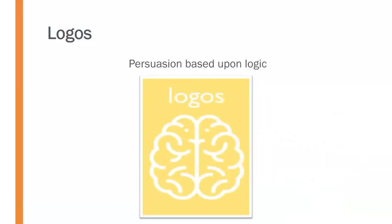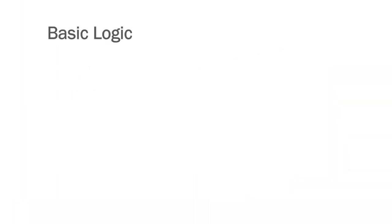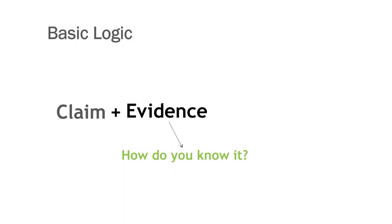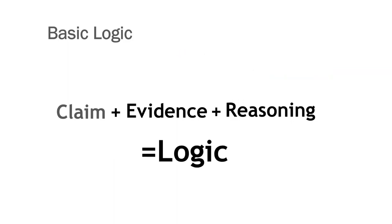Thinking about logos — persuasion based upon logic — we're appealing to the mind rather than tugging at the heartstrings. We ought to be concerned with facts, statistics, and sound reasoning. These demonstrate the accuracy and veracity of our case through logical appeals. Logic starts with a claim — what do you know? Then you add evidence — how do you know it? Then reasoning — how does your evidence prove your claim? When you combine claim, evidence, and reasoning together, you end up with logic.